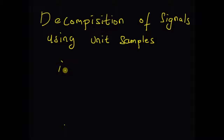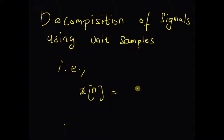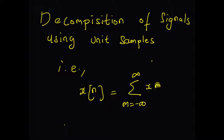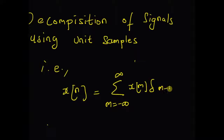Given a discrete signal x of n, we are going to decompose it as a linear combination of infinite number of unit samples. That is, summation m equal to minus infinity to plus infinity, x of m multiplied by the unit sample delta of m minus n. So we are basically decomposing a given discrete signal as a linear combination of infinite number of unit samples.